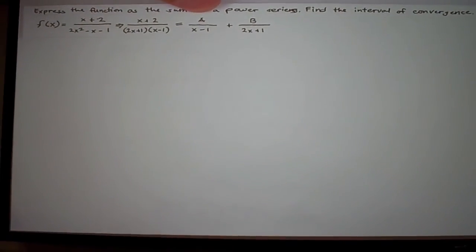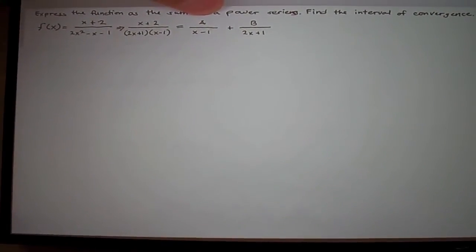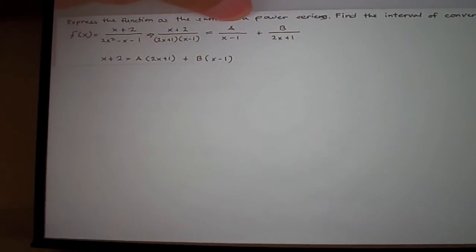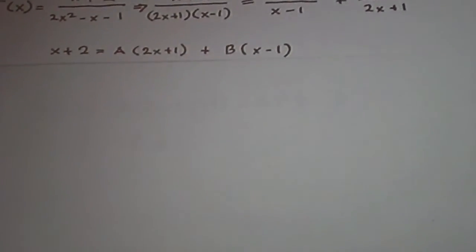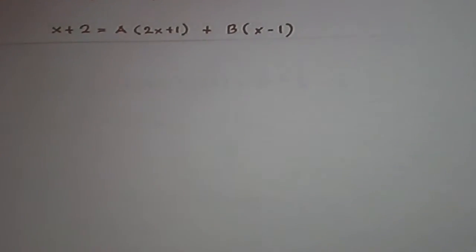We want to solve for A and B so we set it equal to x plus 2, which is equal to A times 2x plus 1 plus B times x minus 1.